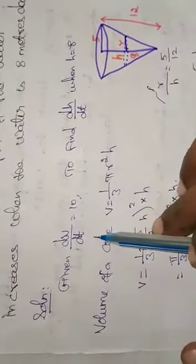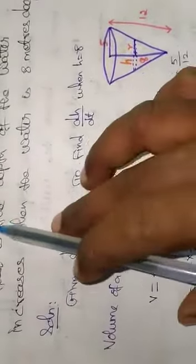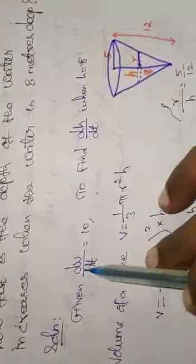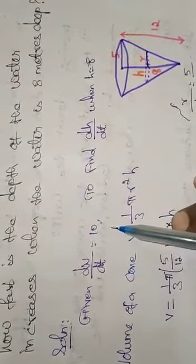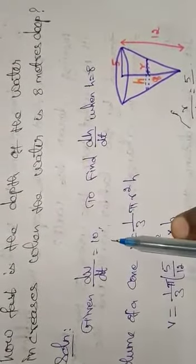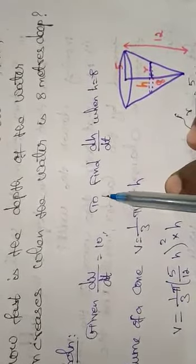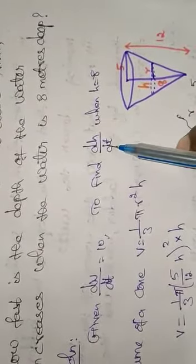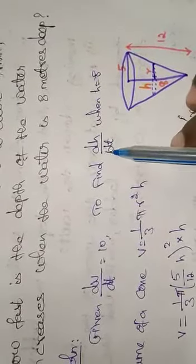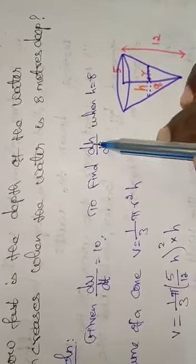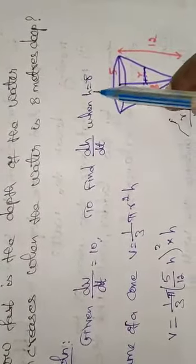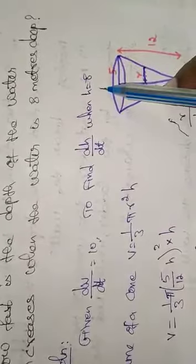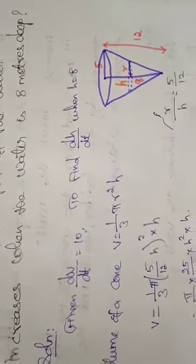Now see the solution. Given dV/dt is equal to the tank at a rate. Rate means dV/dt equal to 10, 10 cubic meter per minute. What we have to find: to find dH/dt, the increasing of water level. So we have to find dH/dt when H is equal to that 8 meters.